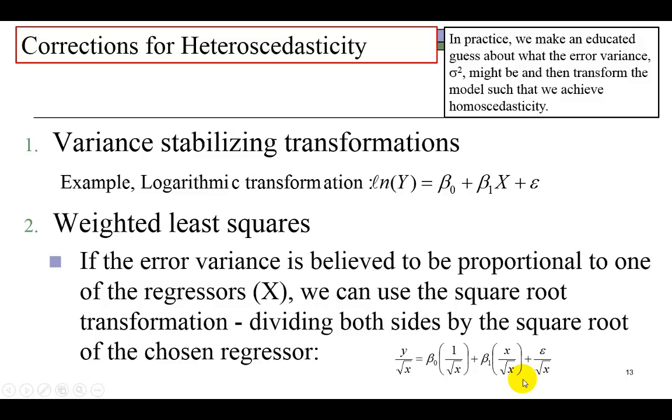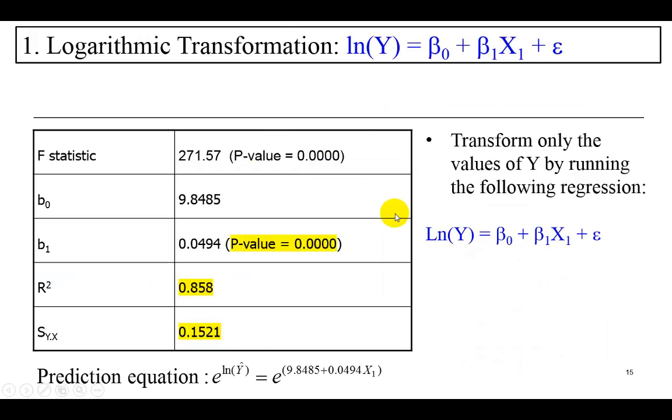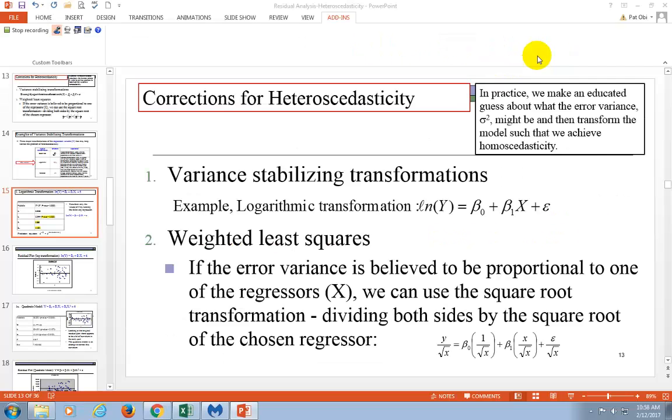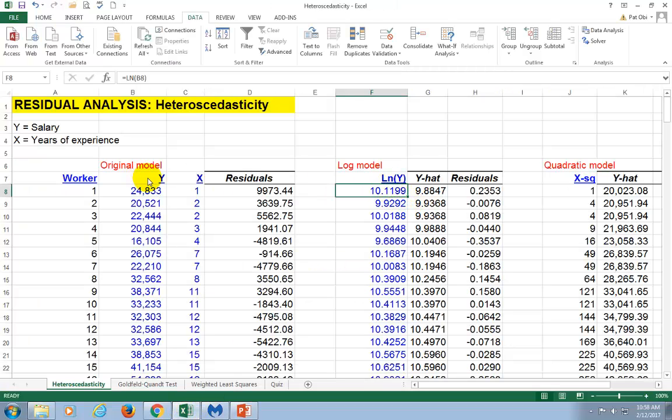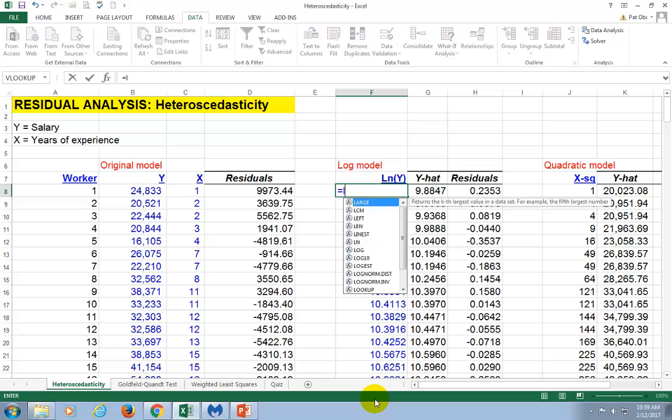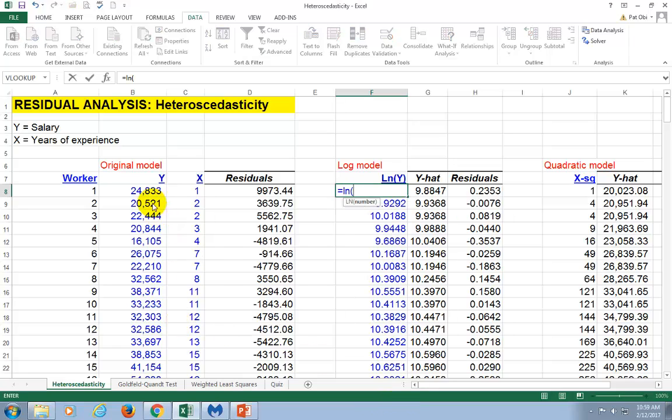Going back to the log transformation, this is the regression model right here. If I go to the spreadsheet, this is what you do. You look at the values of Y, and then you transform them as follows. This first observation there is equal LN, open parenthesis, you click on this guy right here, close parenthesis, and that's it, and then you copy down.